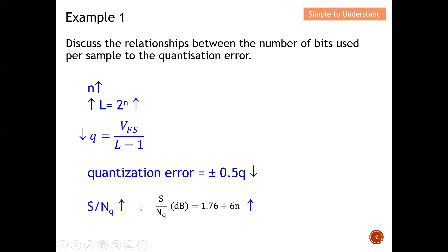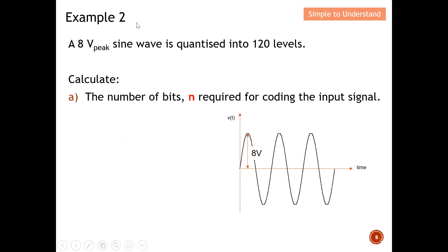The signal-to-noise ratio is governed by S/N = 6N + 1.76 dB. When N increases, the signal-to-noise ratio also increases. This describes the relationship between the number of bits and the quantization error.